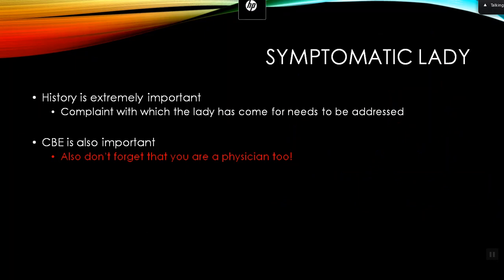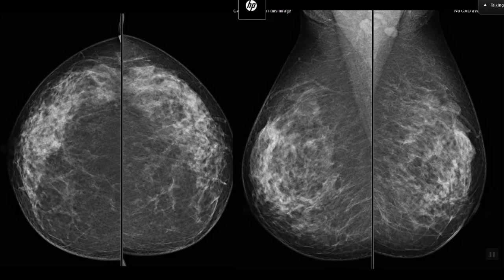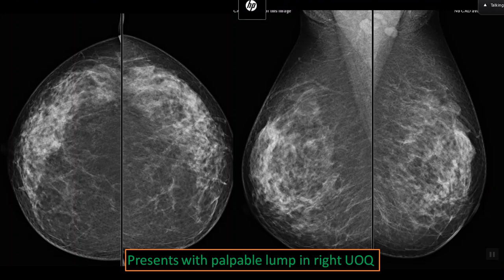Clinical breast examination is important. You are MBBS and then MD Radiodiagnosis, so you must do the examination yourself if required. When I do ultrasound, I first ask the lady where the lump is and feel it myself. Half your impression is made then and there — especially in well-circumscribed masses, you can feel whether it is a fibroadenoma or a cancer. By the feel of the lump it is not going to be confusing.